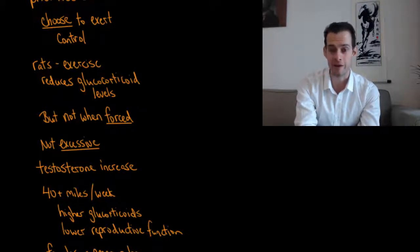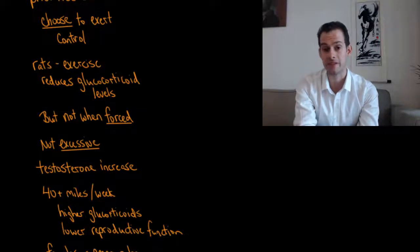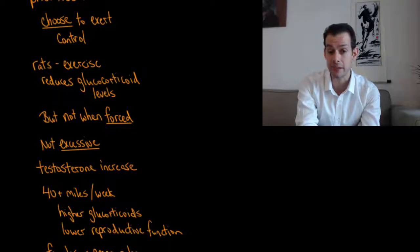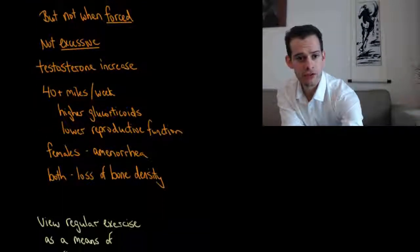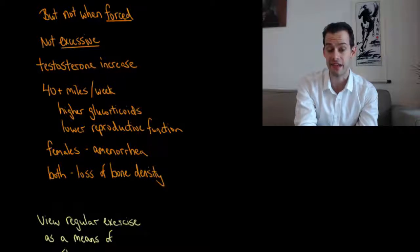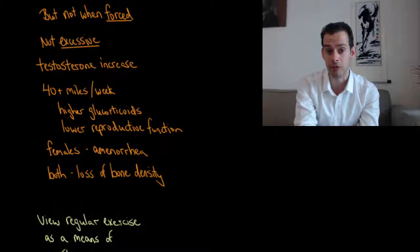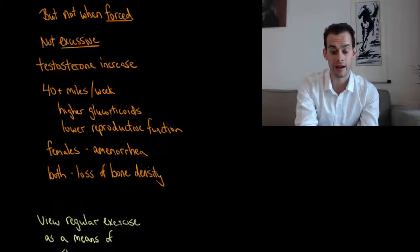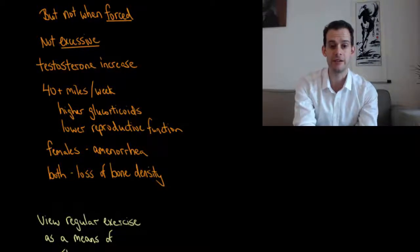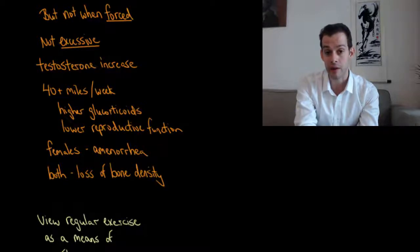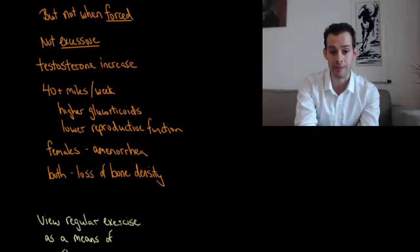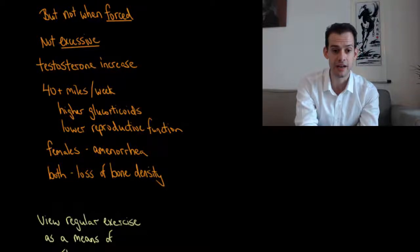This means that we want to make sure that we're exercising voluntarily. It's not something that is being forced upon us. Another thing that we can see is it's important for exercise not to be excessive. For most people, this is not a problem. But one way we can see the effects of excessive exercise is that in males who engage in moderate physical exercise, we see an increase in testosterone. But once they start doing things like running more than 40 miles per week, then we start to see actually decreases in testosterone and higher levels of glucocorticoids. We also see reduced reproductive function. In females, we see amenorrhea, which refers to cessation of the menstrual cycle. We also see loss of bone density in males and females who engage in excessive amounts of exercise.